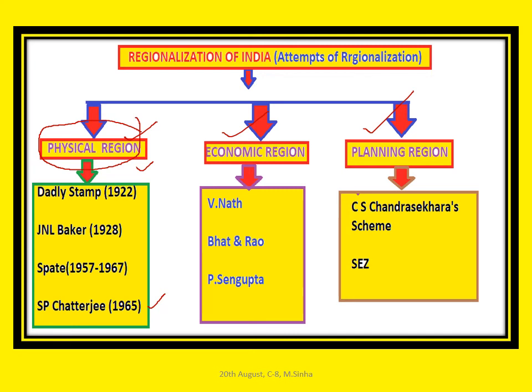The second is Economic Regionalization. First proposed by V. Nath — the basis of his classification was soil, climate, topography, and land use as economic indicators. He divided India into 15 Resource Development Regions and 61 small regions, such as the Western Himalayan Region and Eastern Himalayan Region.